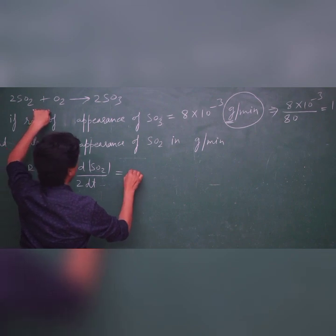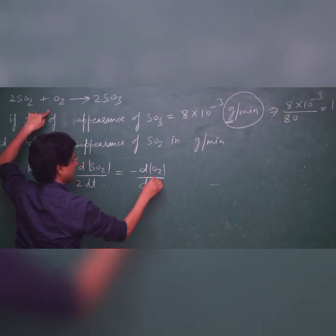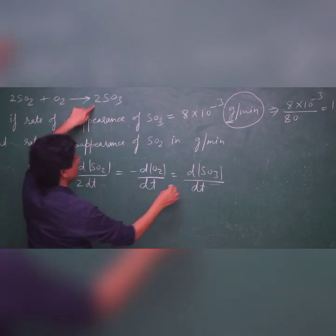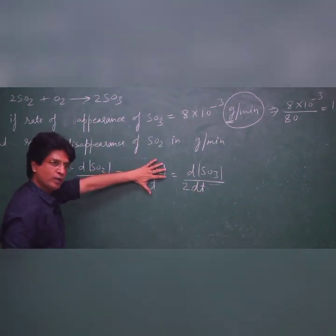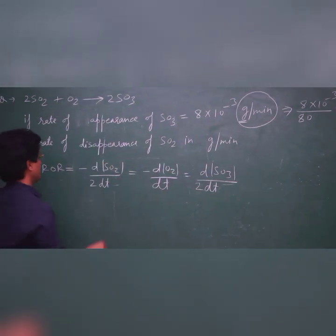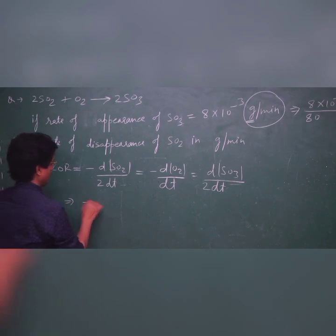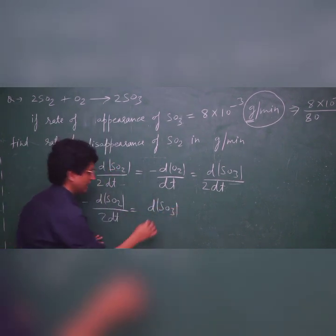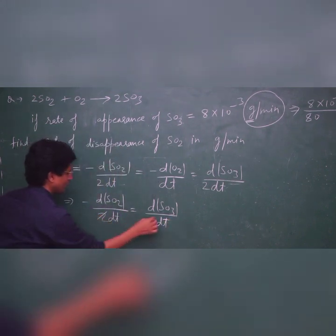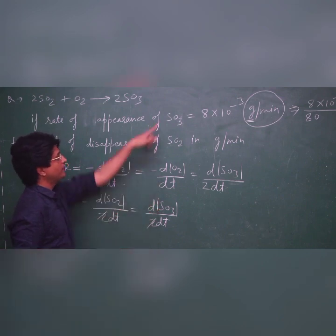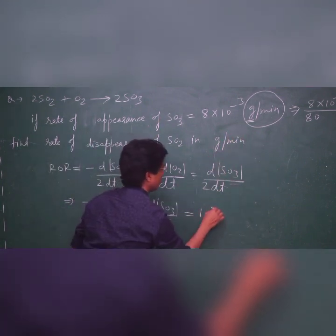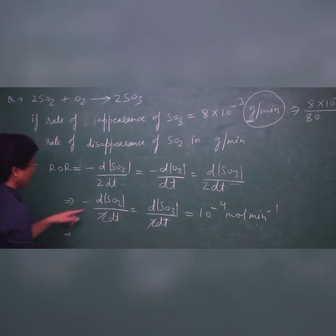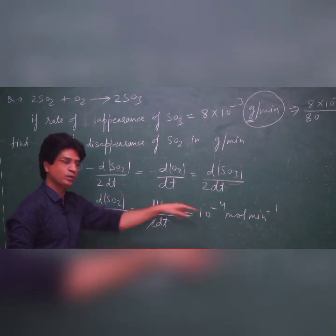I know the rate of reaction can be written as minus dSO₂/(2dt) = minus dO₂/dt = dSO₃/(2dt). Since they have given SO₃ data and are asking for SO₂, I use: minus dSO₂/(2dt) = dSO₃/(2dt). The 2s cancel, so the rate of disappearance of SO₂ equals the rate of appearance of SO₃, which is 10⁻⁴ moles per minute.